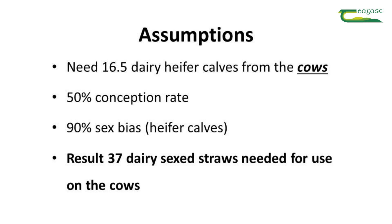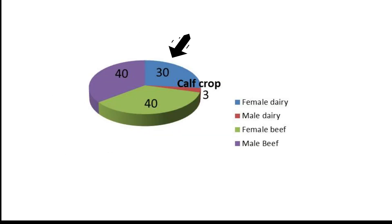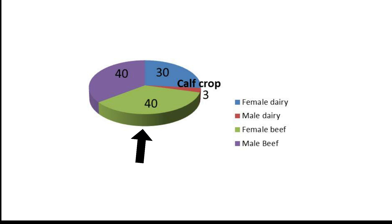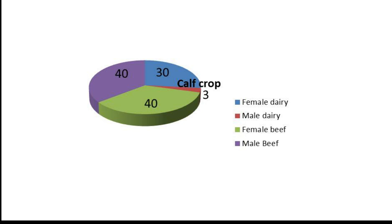Adding it all up, the calf crop looks like this: 30 female dairy calves, 3 male dairy calves, 40 female beef cross calves, and 40 male beef cross calves. The total number of pregnancies across our 125 available animals — 100 cows and 25 heifers — is 114 pregnancies.